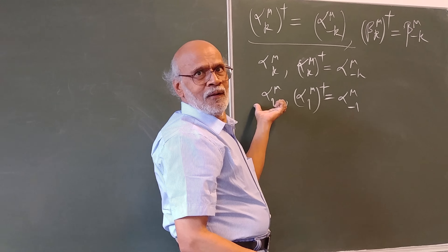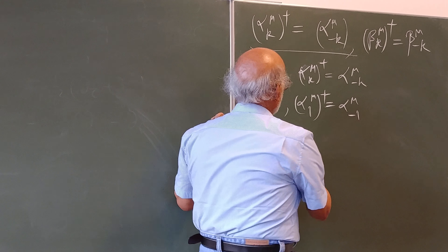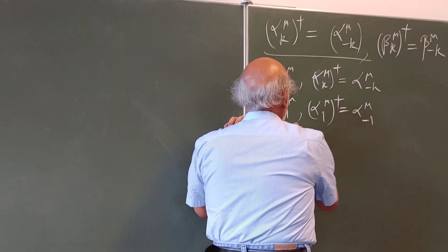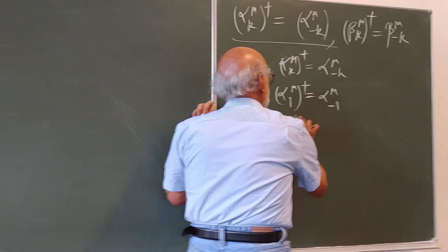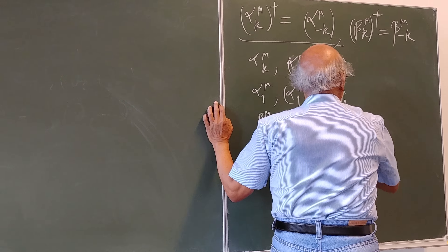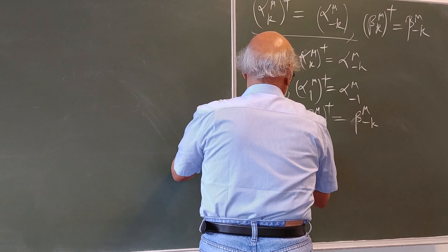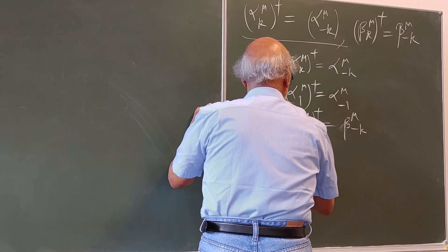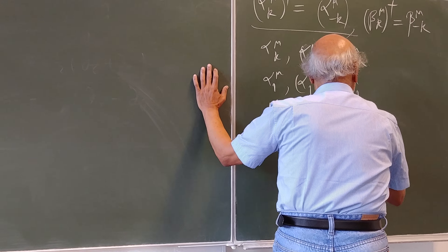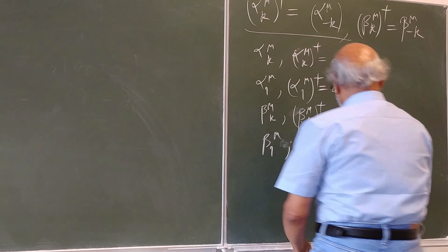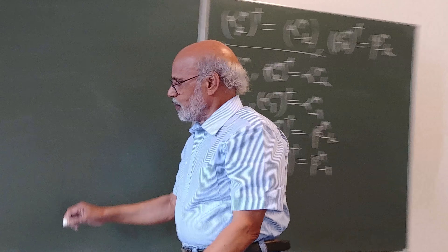Any relation operator is this okay for any state, and similarly for the beta mu k. This is one set of beta mu k dagger; this is beta minus k. So I would have beta 1 mu — this is 1 — and beta mu 1 dagger would be beta minus 1, and similarly for 2 and 3 and so on.